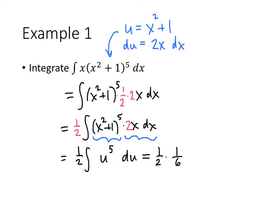Antiderivative of u to the 5th is 1 sixth u to the 6th plus c, and then the only thing that's left to do is substitute back in the original variable. 1 half times 1 sixth is 1 12th, u was x squared plus 1, and there's my final answer.